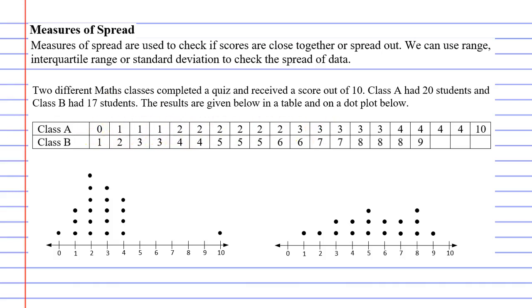If we look below, we can see that class A had one student that got 100%. They got 10 out of 10, but most of the students got between 0 and 4 marks. Class A is also below as a dot plot. Here's our student that got 10 out of 10, and these are the group of students that got between 0 and 4 marks.